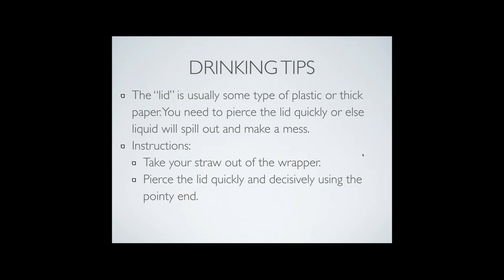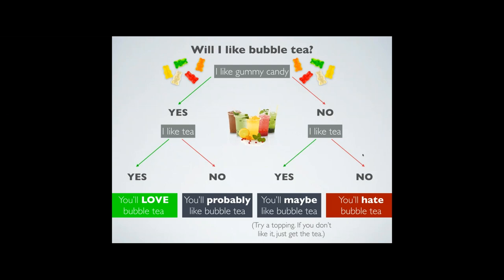When you get the bubble tea, they pour it in a plastic cup and put it in a machine that taps on a lid — either plastic or thick paper. You have to pierce the lid with your pointy straw. Be very quick and decisive — if you pierce it just a little bit, it spills everywhere and it's a disaster, showing that you're a novice. And here's a flow chart to think about whether someone would like bubble tea: do you like gummy candy? If you like that gummy texture and you like tea, you're going to love bubble tea. If you don't like gummy candy and you don't like tea — I'm sorry, this is not for you.